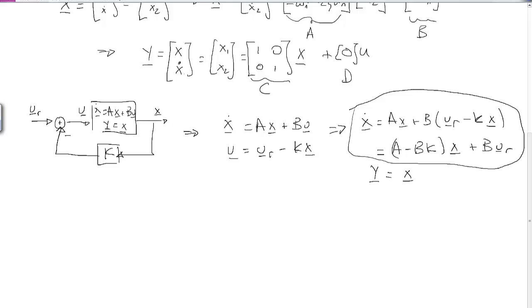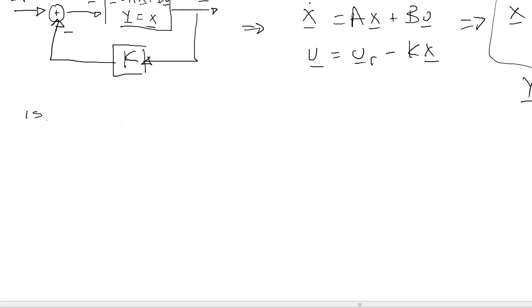To understand the stability of our system, we need to understand the eigenvalues of A minus BK. We can check to see if A, B is controllable. If it is, we can arbitrarily place the eigenvalues by picking the right value of K.